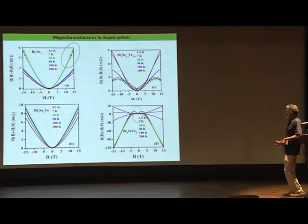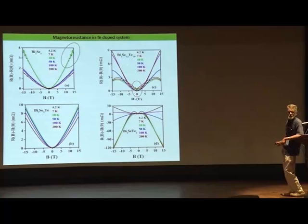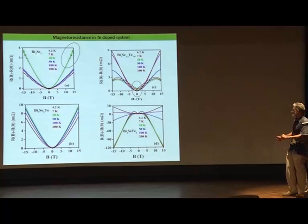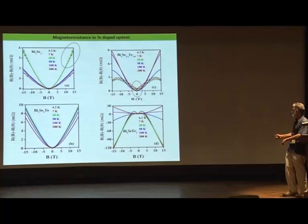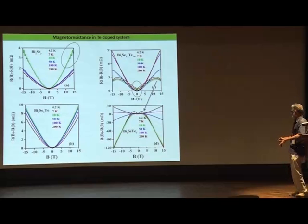In this case, you have a Shubnikov–de Haas oscillation here, and in the other sample you have the feature corresponding to weak anti-localization. The cusp-like behavior is a characteristic of weak anti-localization, and this weak anti-localization changes to weak localization as you increase the field — these are the characteristic features.